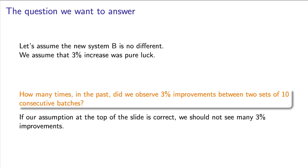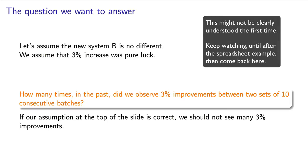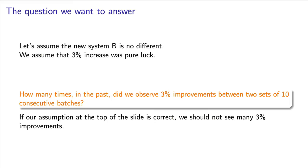Remember, in the first 300 samples you had the same controller. If the new controller made an actual difference, then a 3% improvement should occur with very low probability, by pure chance, in the original data.